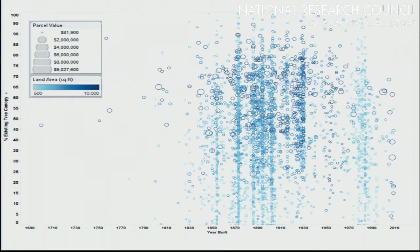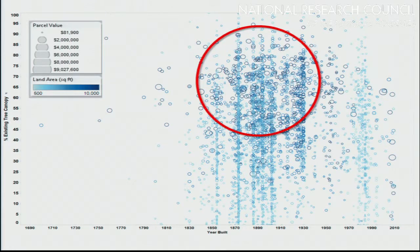This is also useful for thinking about how our urban forest might change. This is data from Cambridge, Massachusetts. Because we have data summarized at the property level, we can look at their property parcel database, existing tree canopy, parcel value, land area, and that sort of stuff. What we see in cities such as Cambridge is a really interesting effect: the housing boom occurred in the late 1800s and early 1900s, and so we see these properties built about 100 years ago that contain vast amounts of very tall trees, which we know from the LiDAR. What's going to happen when all this canopy begins to die off? We may want to think about reaching out to these people.